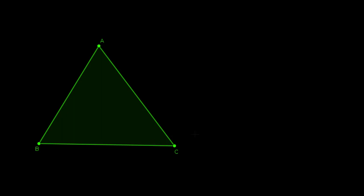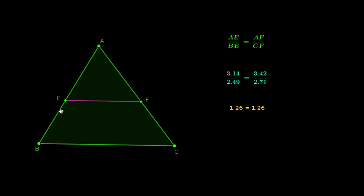In this video we are going to learn the logical proof of Thales theorem, also known as the basic proportionality theorem. Before that, we are going to do an activity. Consider one triangle and draw a parallel line to any one side of the triangle. It divides the other two sides proportionally, which means the ratios are equal.